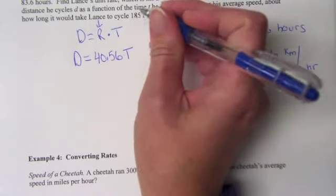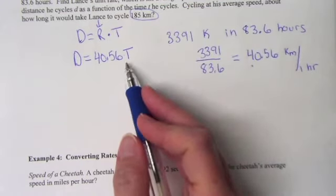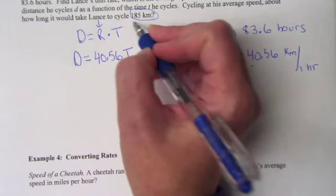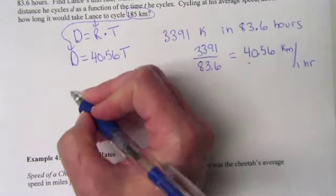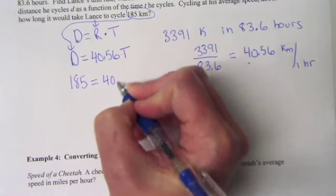Well here, this is distance. They give us a distance. We want to know how long it will take. So our T is going to be our variable. We're going to plug in 185 for D. So we get 185 equals 40.56 times T.